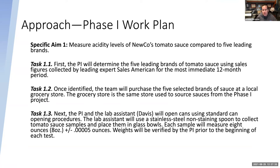This is a very simplified version of a work plan, but you can see here specific aim one — for this example company making a new tomato sauce, specific aim one is to measure the acidity level of NewCo's tomato sauce compared to five leading brands — and I walk you through step-by-step what they're going to do. It's a very simplified version to illustrate the level of detail required when you're breaking out your aims. And I would expect this to flow like a story — a narrative description. It should be really easy to read. The main thing we want to do is make a proposal enjoyable for a reviewer to read.